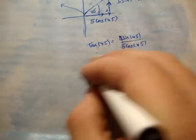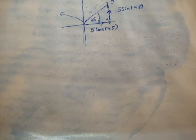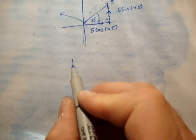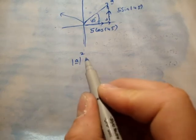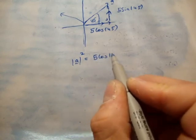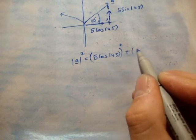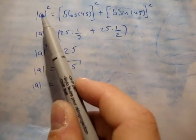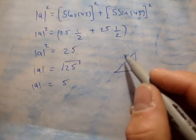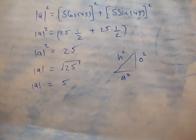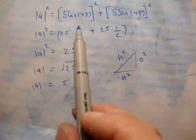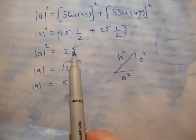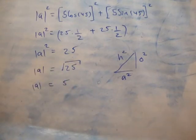Let's just prove this. We want to find the magnitude of A. The magnitude squared — that's the hypotenuse squared — equals 5 cos 45 all squared plus 5 sine 45 all squared. Now cos 45 equals 1 over root 2, so cos squared 45 equals one half; the same for sine squared 45. Adding the two terms gives 25, and taking the square root gives the magnitude of A equal to 5.